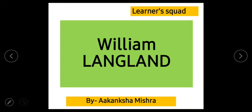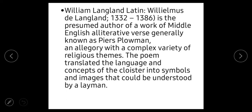This is Agang Shah Mishra and now we will start. We will discuss a little bit about William Langland — his words and his life. William Langland, also known as Williamus de Langland, was born in 1332 and died in 1386. He is the presumed author of a work of Middle English literature, a literary alliterative verse generally known as Piers Plowman.